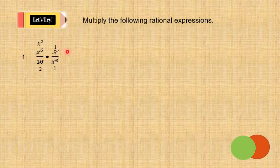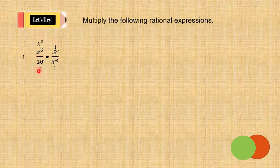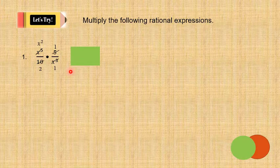Then after that, multiply numerator to numerator and denominator to denominator. So the answer is x² over 2.